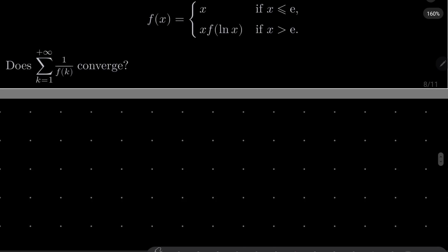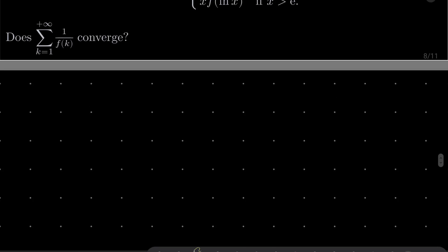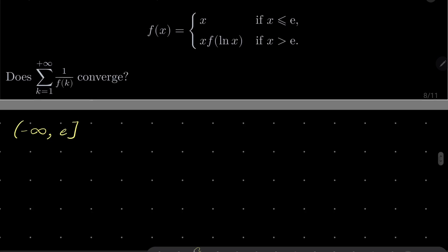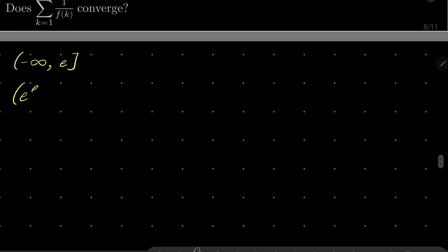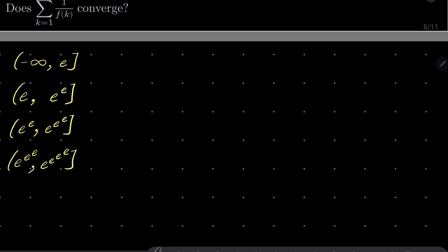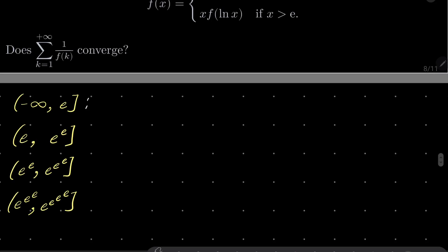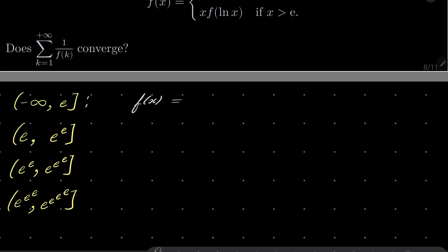Let's start with partitioning the set of real numbers into pieces and evaluating the function on each piece. On the first piece, from minus infinity to e, what is f of x? Well, f of x is just x. Nothing unusual here.